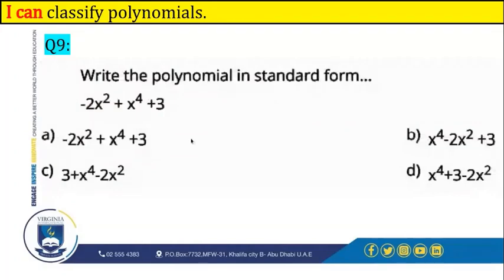Write the polynomial in standard form: negative 2x to the power of 2 plus x to the power of 4 plus 3. This polynomial has three terms: negative 2x to the power of 2, x to the power of 4, and 3. When writing in standard form, we take the highest degree first. The greatest power is x to the power of 4, so it goes first. The second highest is negative 2x to the power of 2, and 3 has no degree so it goes last. So it's x to the power of 4 minus 2x to the power of 2 plus 3 — answer choice B.